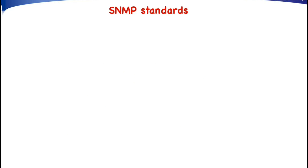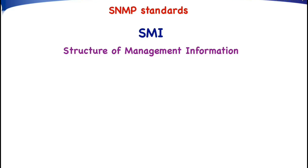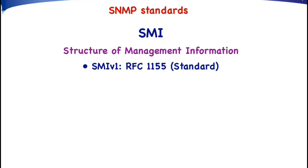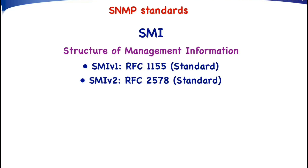The second category of internet management standards are the SMI standards. SMI stands for Structure of Management Information. In fact, there are two versions of the SMI defined. SMI version 1 is defined in RFC 1155, and the original MIB modules were defined according to SMI version 1. The second version of SMI, which is an improvement over version 1, is defined in RFC 2578.